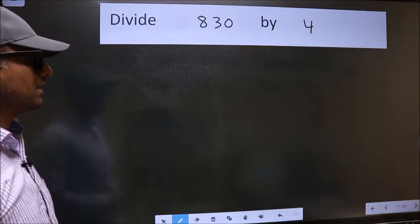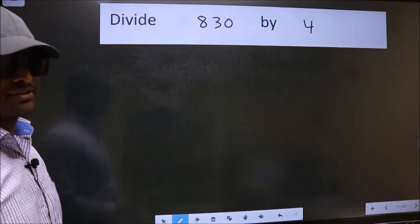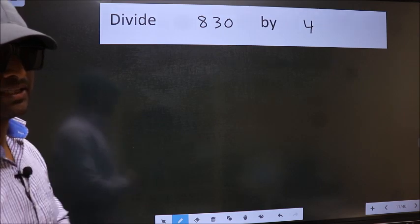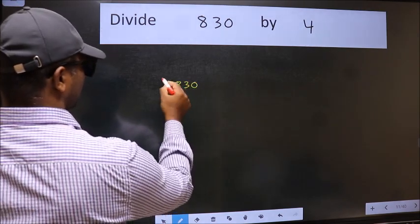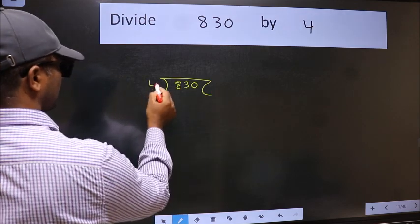Divide 830 by 4. To do this division, we should frame it in this way. 830 here and 4 here.